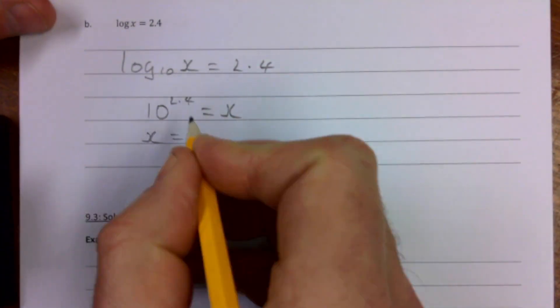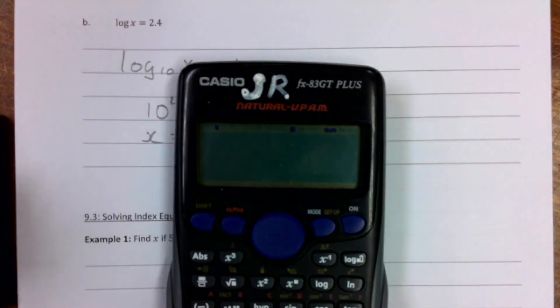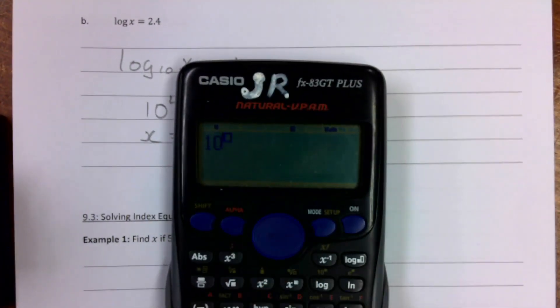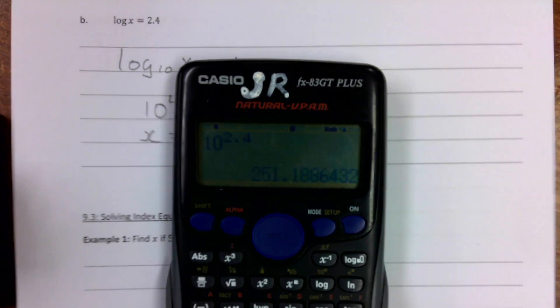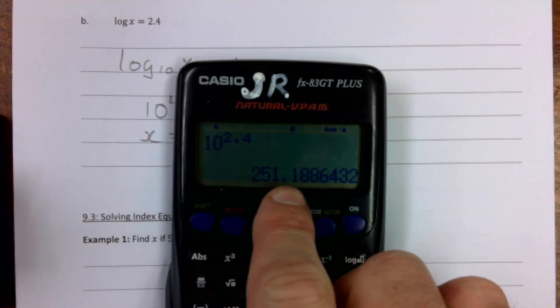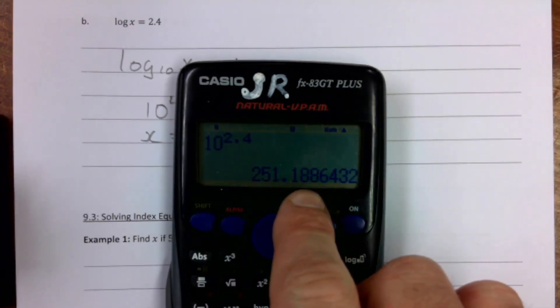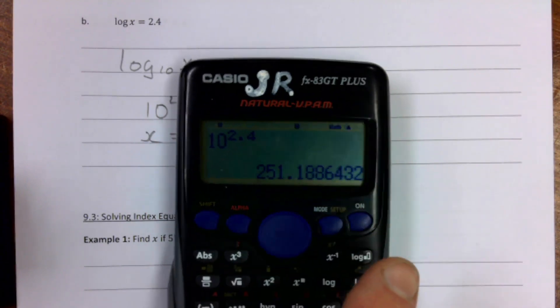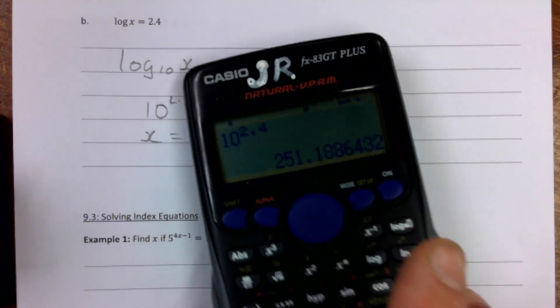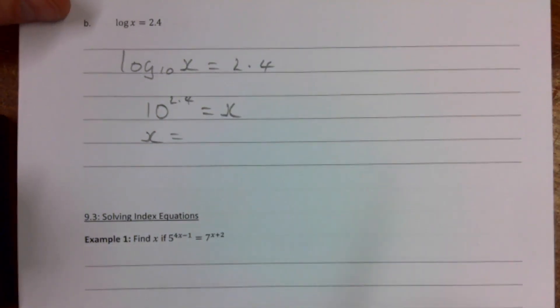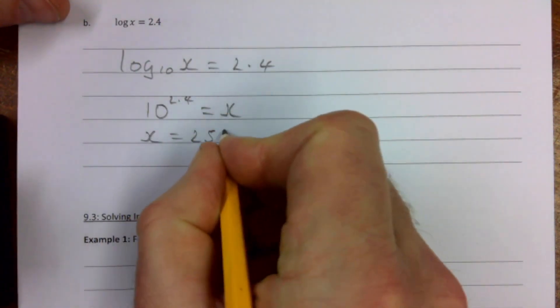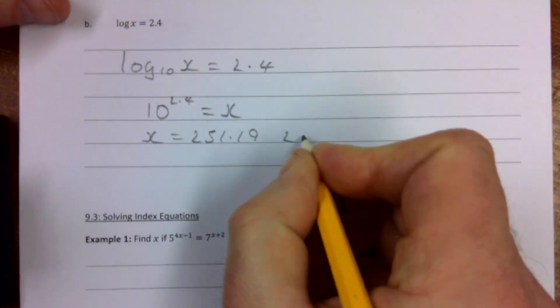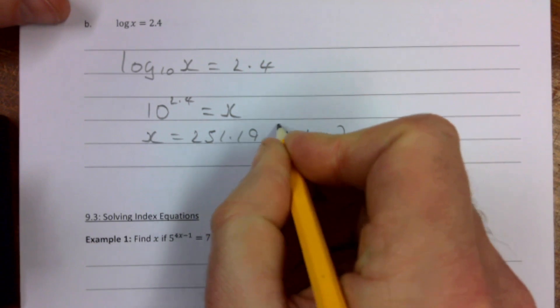And again, we put that into our calculator. 10 to the power of 2.4, and this gives me 251.19, if you can see that there. Okay, 251.19, two decimal places. 251.19, that's the two decimal places.